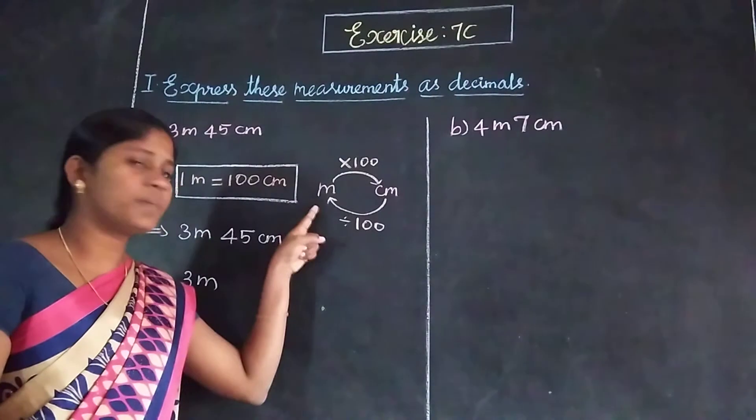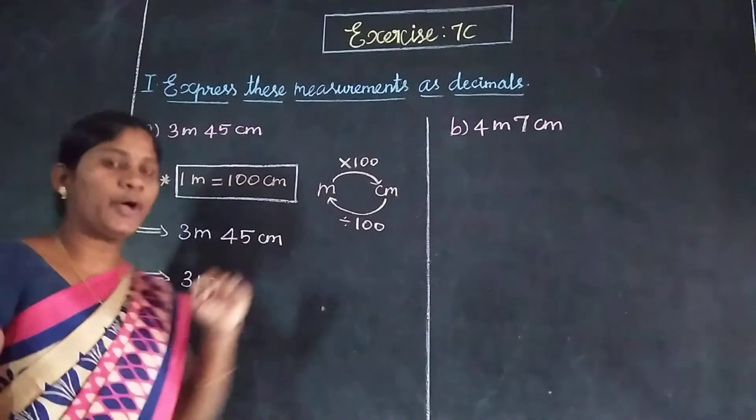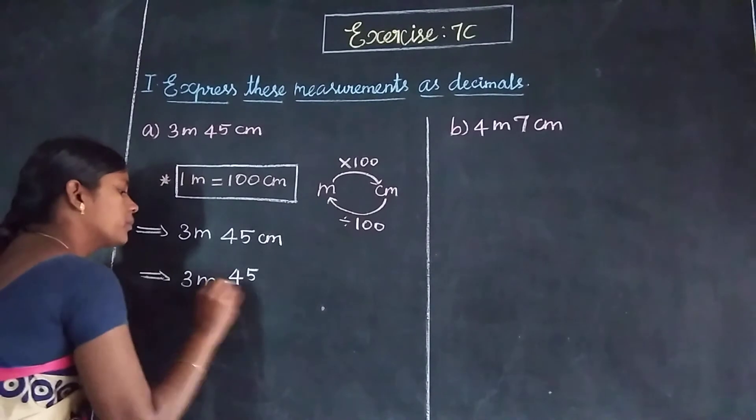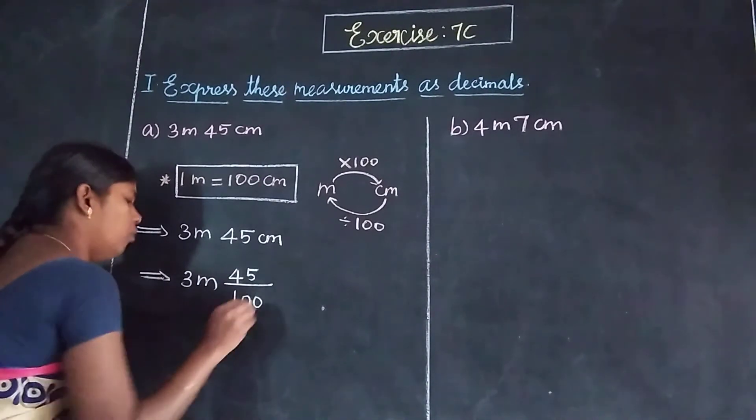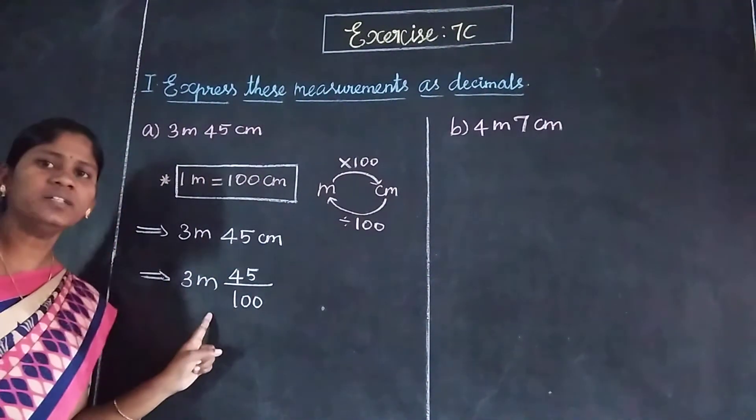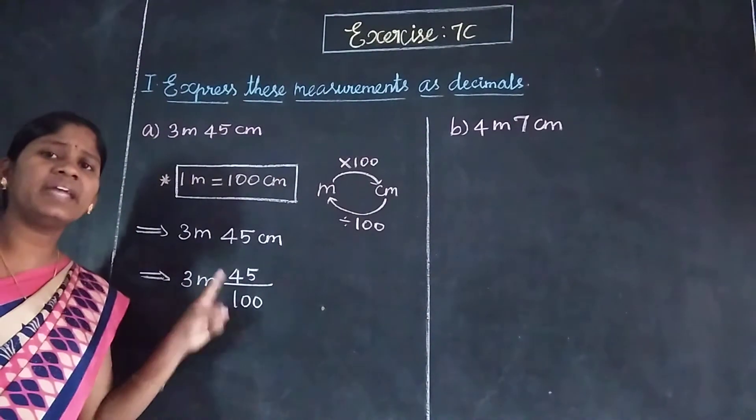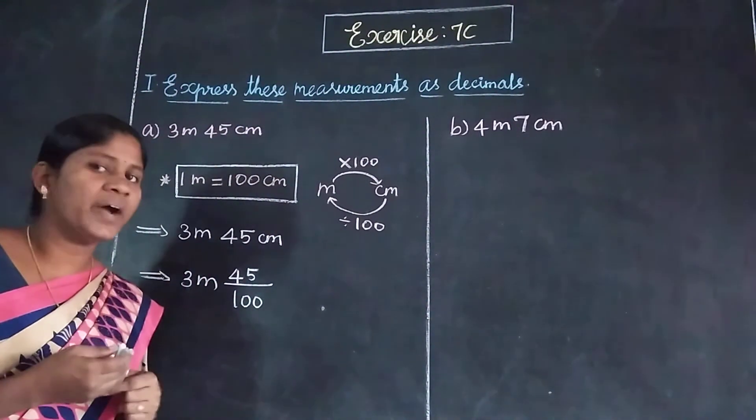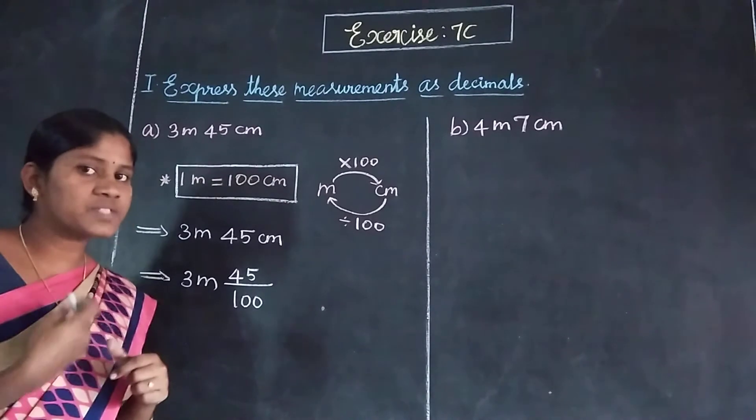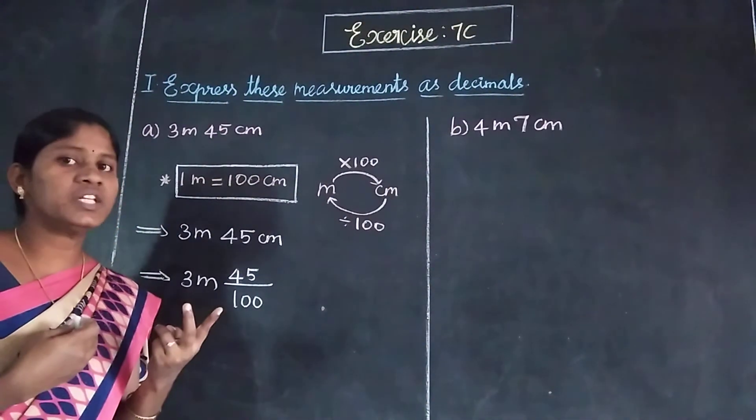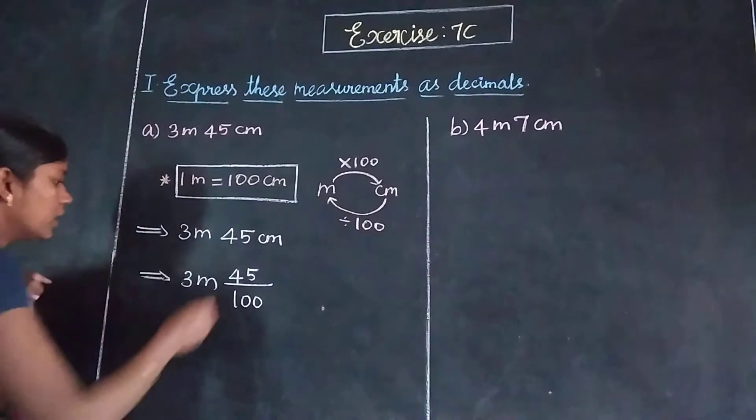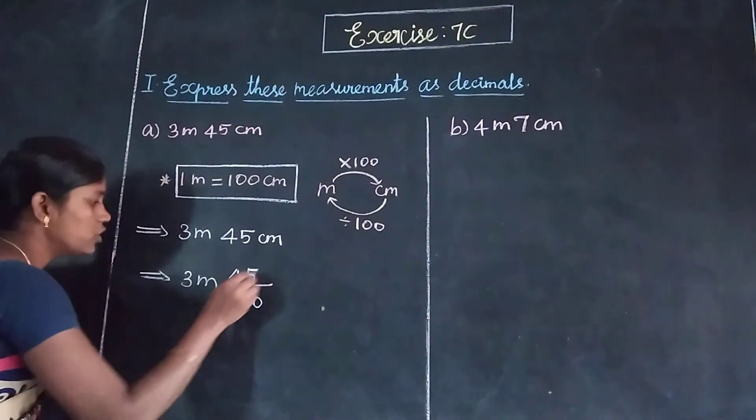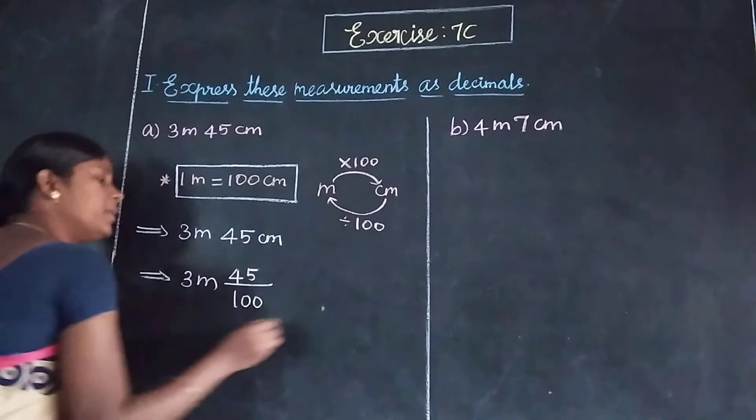Centimeter to meter, we divide by 100. So 45 centimeters divided by 100. If we divide 45 by 100, how much is it? Two decimals we will move. 3 meters we can already write.